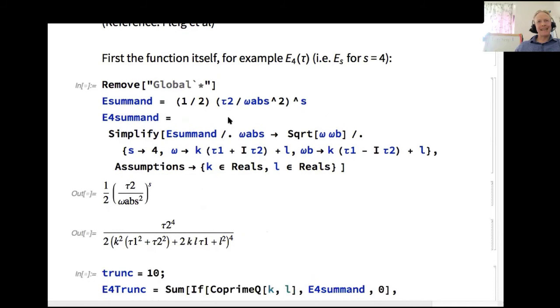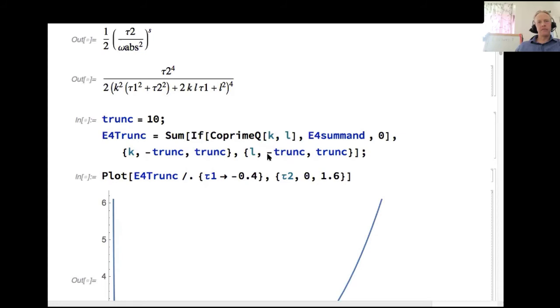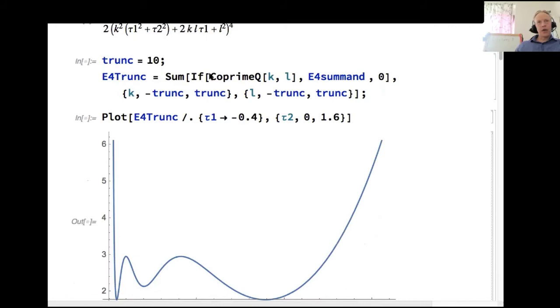So here I define this double sum. I picked the case s equals 4. This e4 object, I plot it for some values, and it has this reasonably nice shape. Where I set tau 1 equal to minus 0.4, and I plot for different values of tau 2. I restricted to a sum of co-prime integers, K and L. Why should these integers, sometimes I call them K and L, sometimes I call them M and N, same thing. Why should they be co-prime?